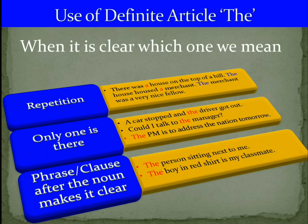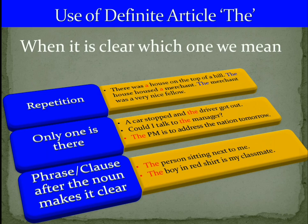The third rule for using 'the' is when a phrase or clause after the noun makes it clear which thing we are talking about. For example, 'The person sitting next to me' — the phrase 'sitting next to me' makes the person particular. Another example: 'The boy in the red shirt is my classmate' — the phrase 'in the red shirt' identifies which boy specifically. So the phrase or clause makes the noun definite, and that's why we use 'the'.